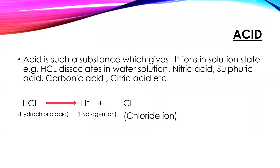Acid is a substance which gives hydrogen ions (H+) in solution state. For example, hydrochloric acid dissociates in water solution. Nitric acid, sulfuric acid, carbonic acid, citric acid, etc. are examples of acids. The chemical reaction shows: hydrochloric acid turns into hydrogen ion plus chloride ion (HCl → H⁺ + Cl⁻).